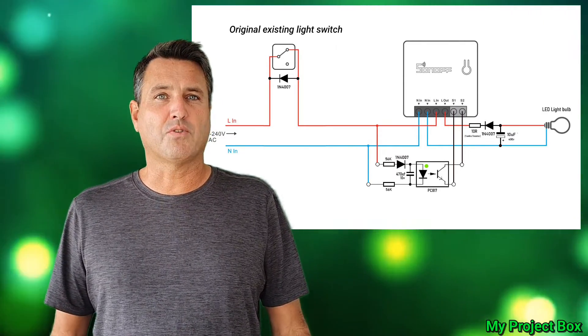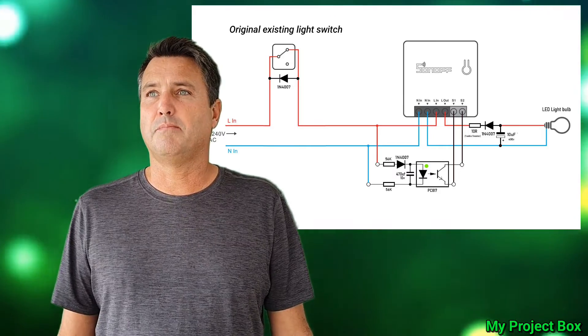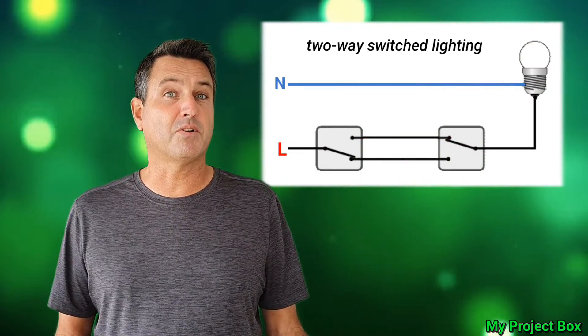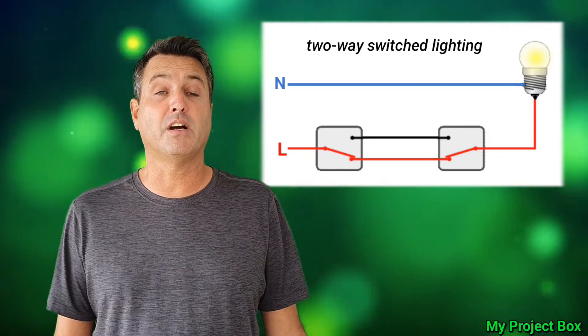Now the circuit works great with an ordinary light switch. The trouble is when you wanted to use two-way lighting, that's what everybody asked me about, is it possible to do it with two-way lighting?